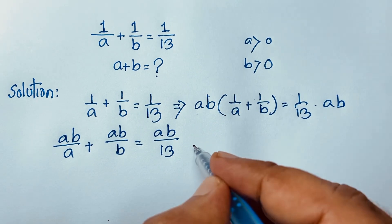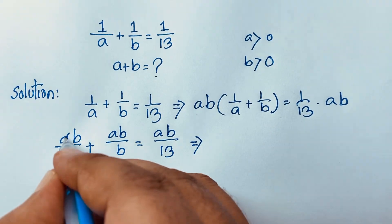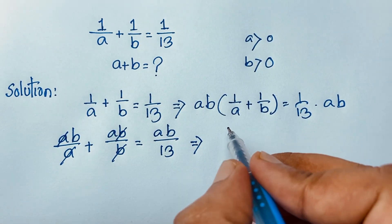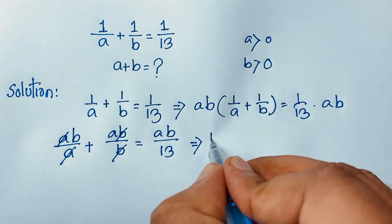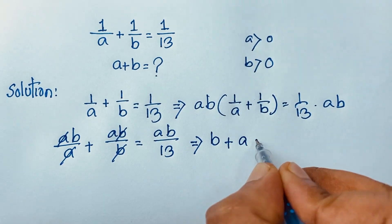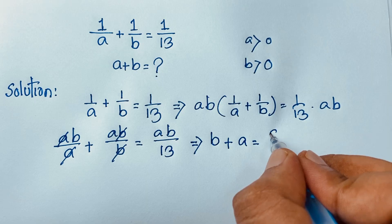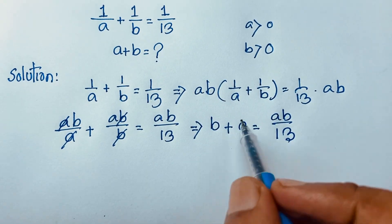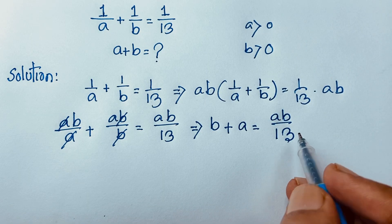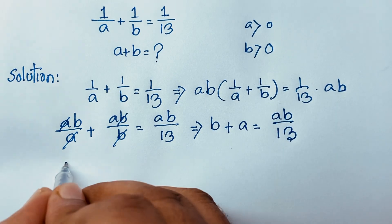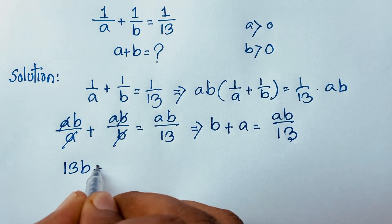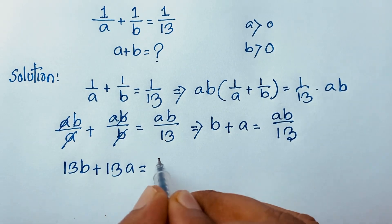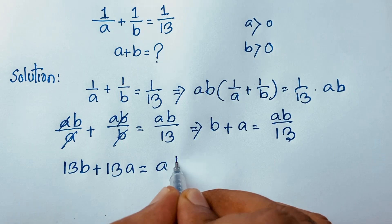Now here, A cancels out and B cancels out. It will be B plus A is equal to AB over 13. Now if I multiply both sides by 13, it will be 13B plus 13A is equal to AB.